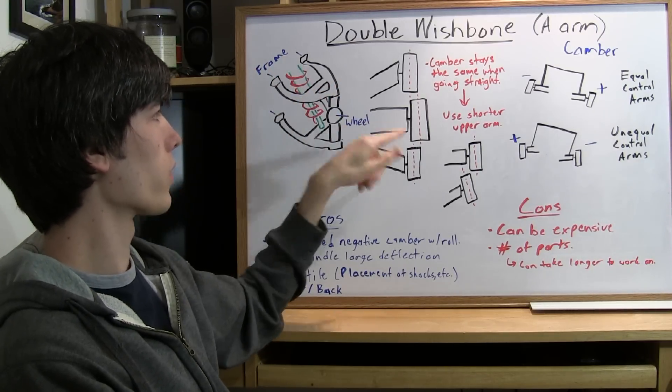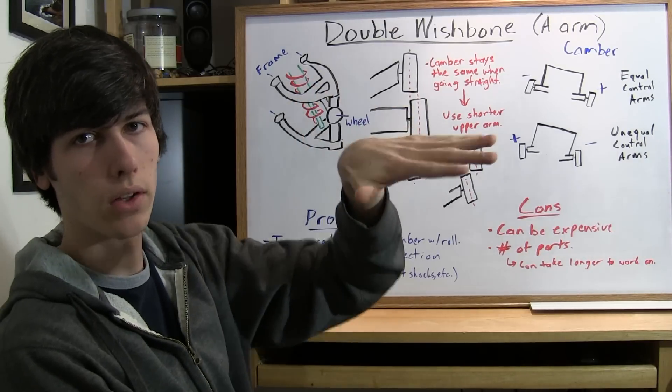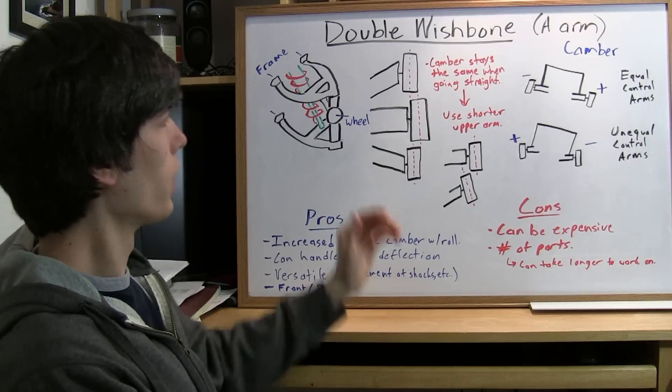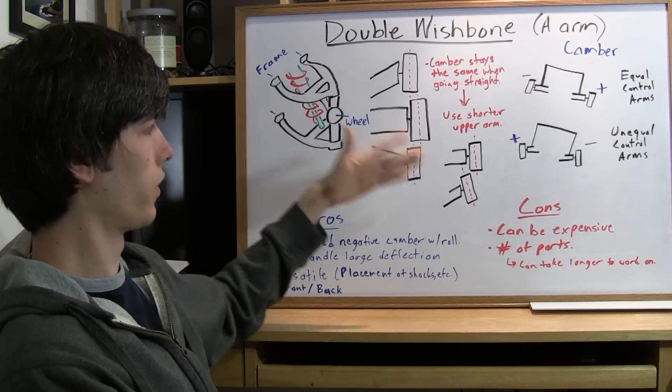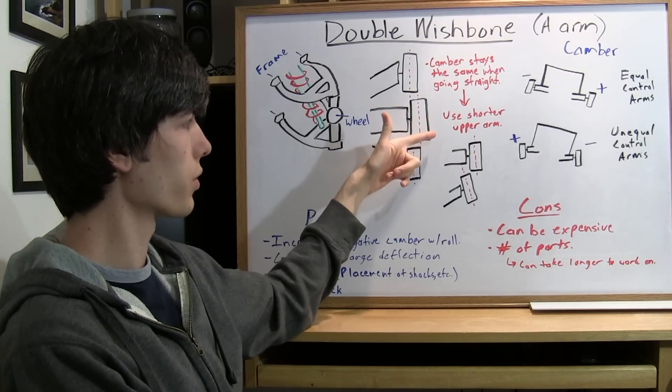Now, the disadvantage is when you go around a corner that camber angle changes because your body, the body of the car, rolls. So what they decided to do, they being engineers, was to use a shorter upper control arm.